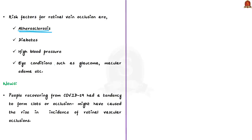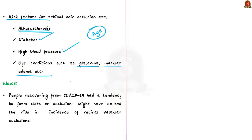Risk factors of retinal vein occlusion include atherosclerosis, diabetes, high blood pressure or hypertension, glaucoma, and macular edema. The risk increases with age. Coming to the article, people recovering from COVID-19 had a tendency to form clots or occlusions, which could be a reason behind the rising incidence of retinal vascular occlusions. So COVID-19 could be a reason for increased patients with eyesight loss — suggesting COVID-19 could have permanent effects on human beings.